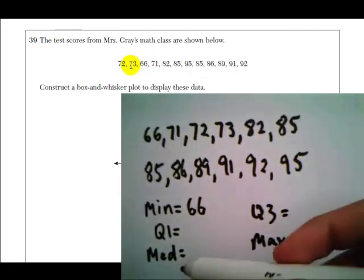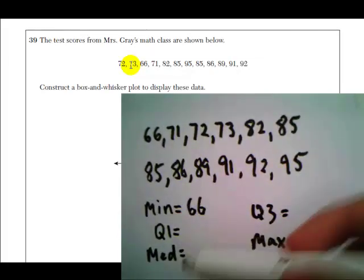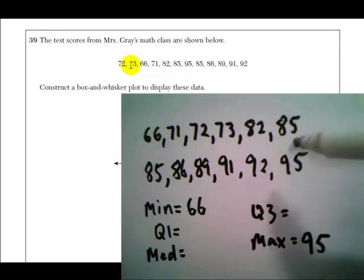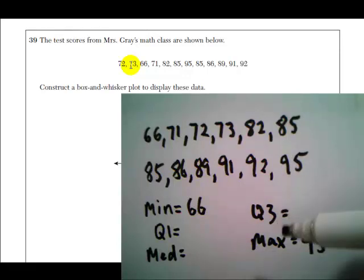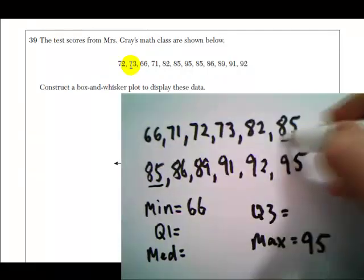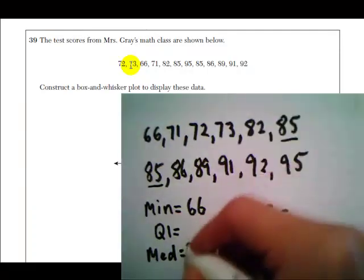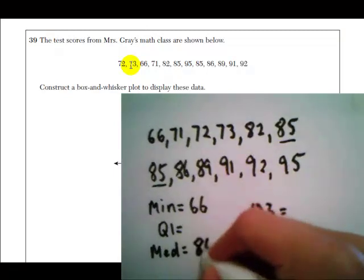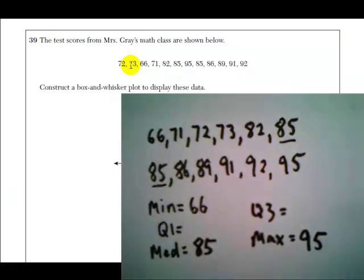Now, the median is the number that's in the middle of all the numbers. Since there are 12 numbers, there's really no middle number. So when that happens, we always take the average of the two numbers that are closest to the middle. The numbers that are closest to the middle are 85 and 85. The average of those two is just 85. So the median is 85.